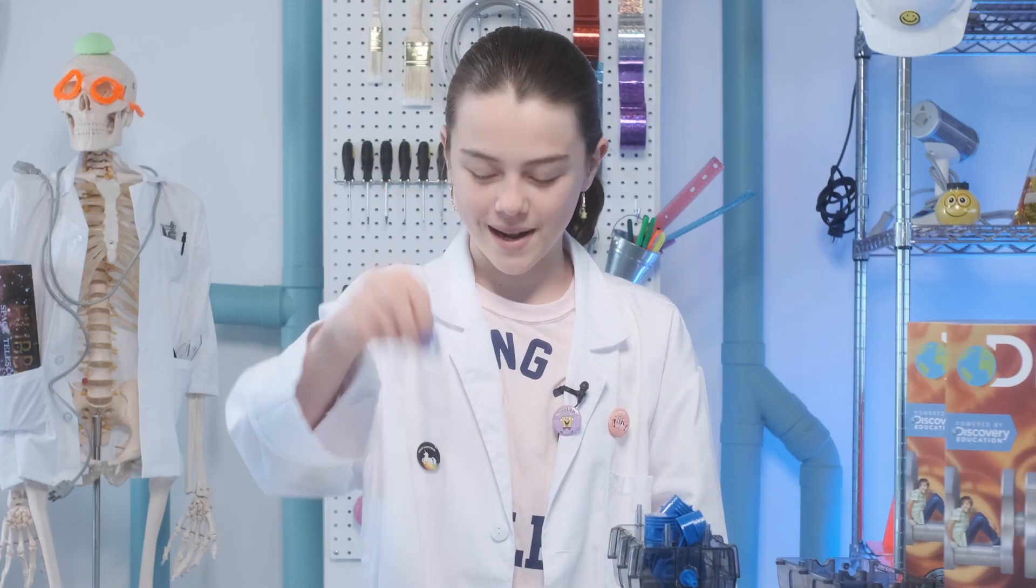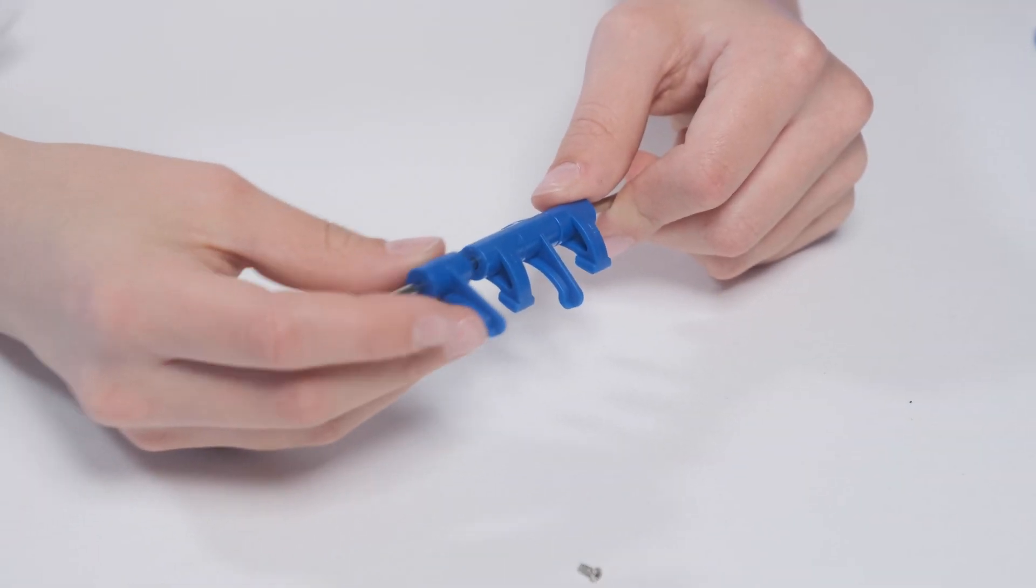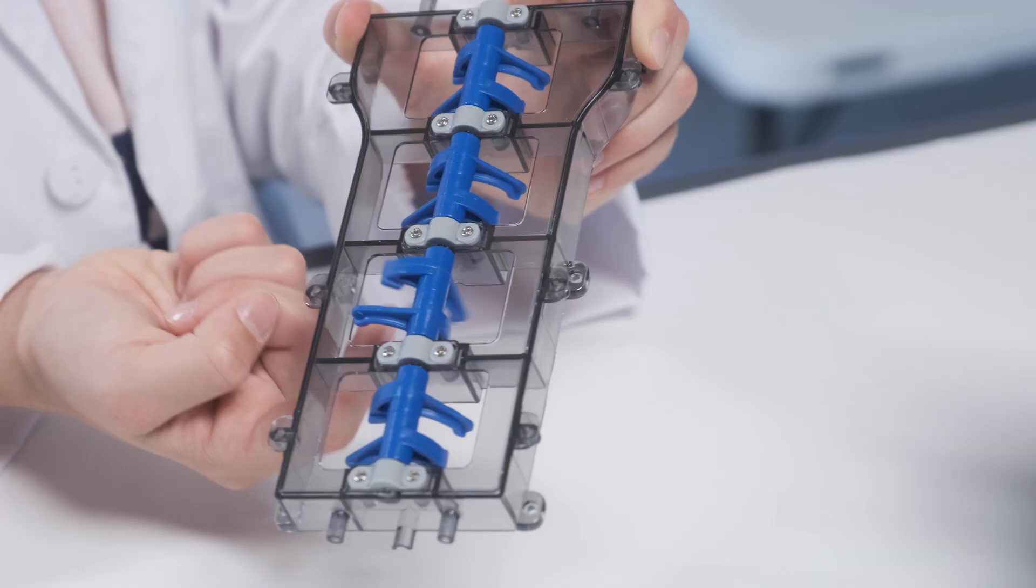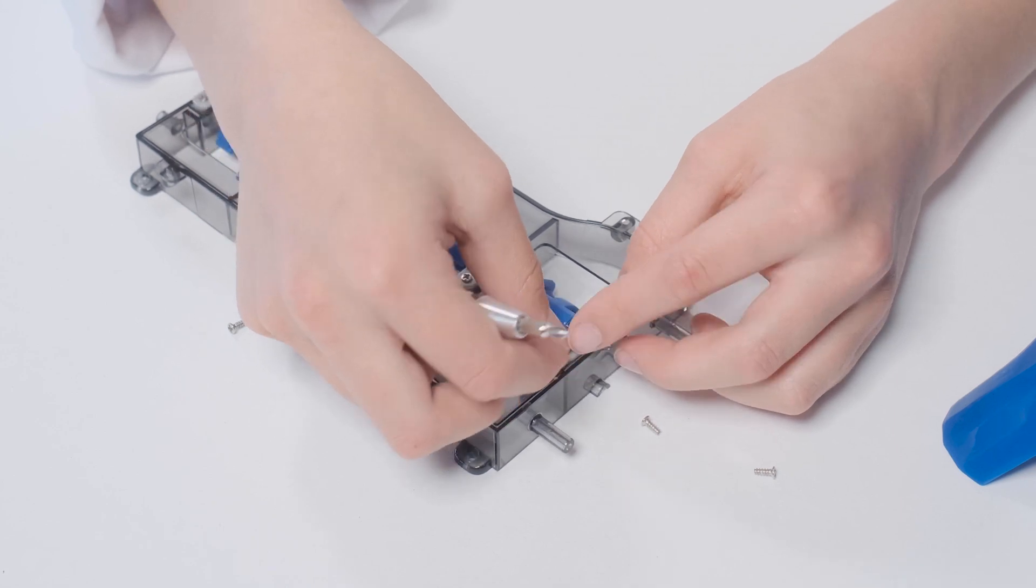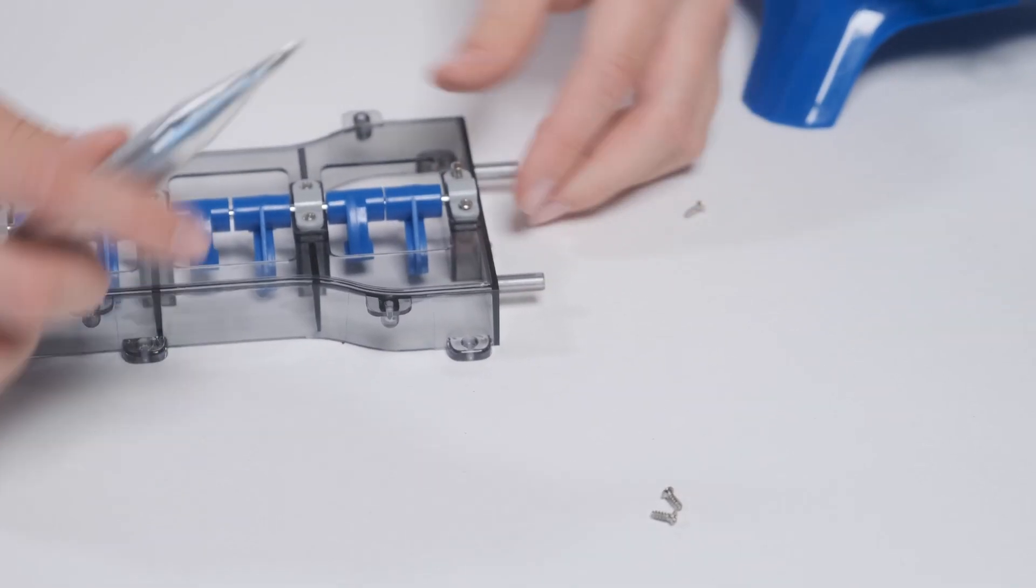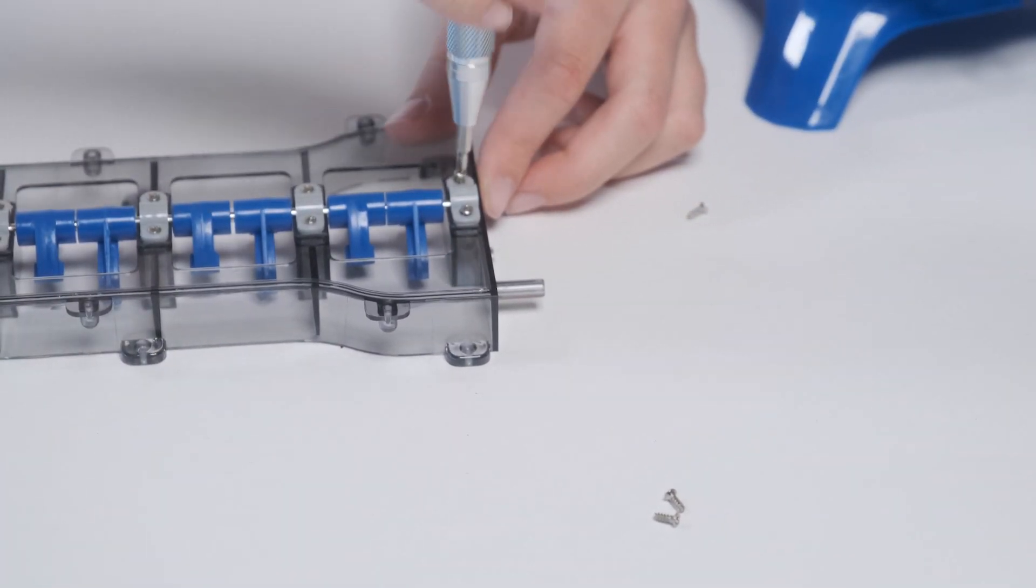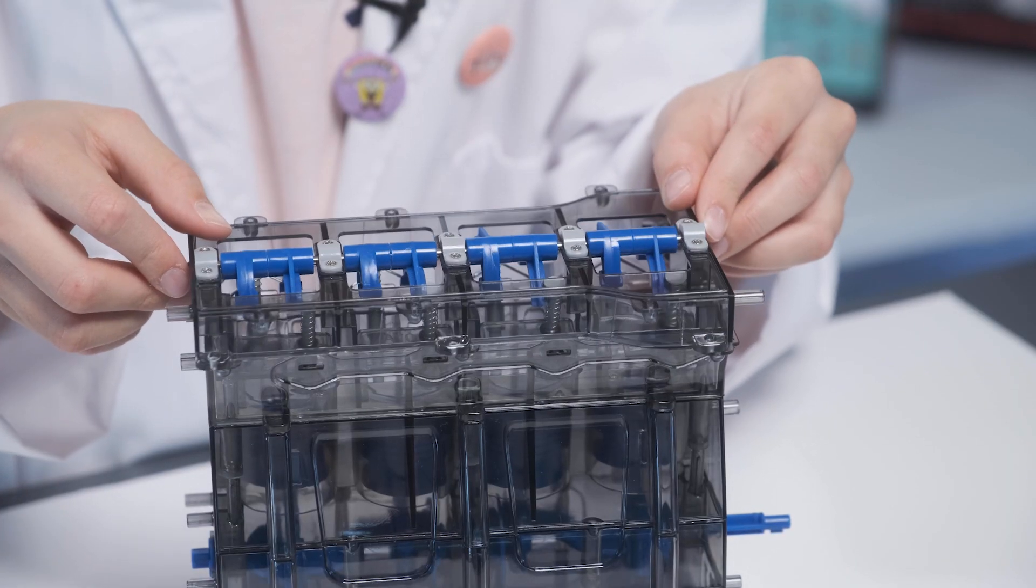Get those rocker arms ready. Slide the rocker arms onto the short shaft. Each should face the opposite direction from the arm next to it. Going to stick these bearings in to keep the short shaft in position. Then let's cover it up with the rocker arm cover.